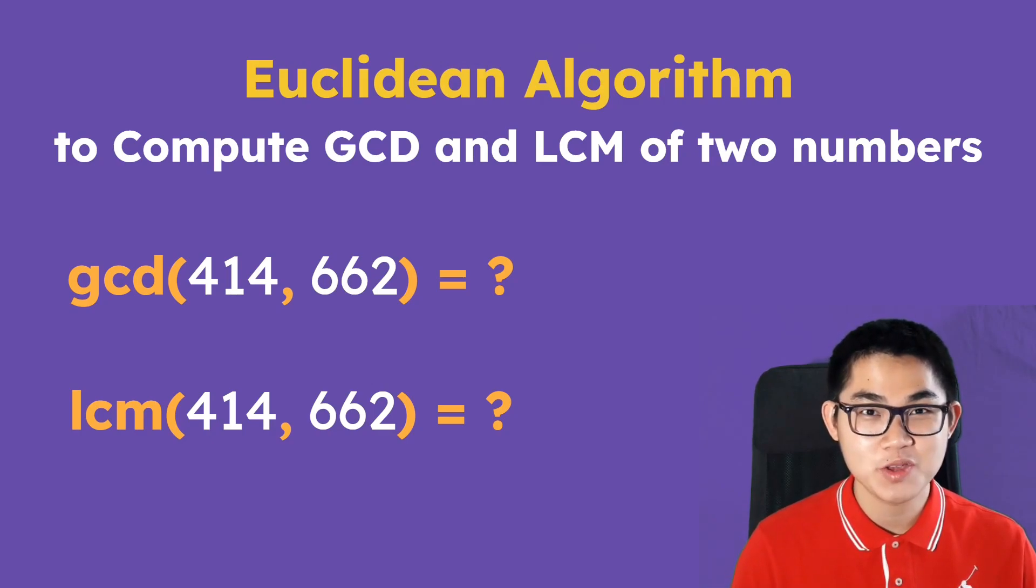In this video I'm going to show you how to use the Euclidean algorithm. Then at the end of the video I will also show you the Python code. Let's say that we want to find the GCD of 414 and 662.